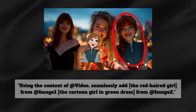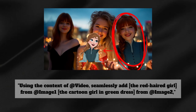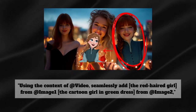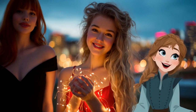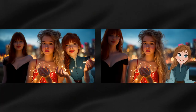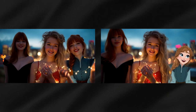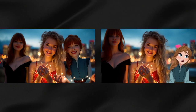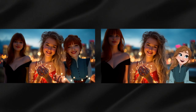I decided I wanted my Anna to stay as she was, so I said: using the context of @video, seamlessly add the red-haired girl from @image 1, the cartoon girl in green dress from @image 2 — and Anna stayed in cartoon mode. But she ended up way too tiny compared to the other girl, like she'd been shrunk in the wash. That teaches us another thing: style consistency is everything. If your video is realistic, your elements better be realistic too, or you're going to end up with some seriously wonky results. The AI is smart, but it needs that context to work its magic properly.